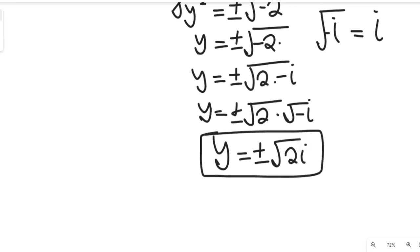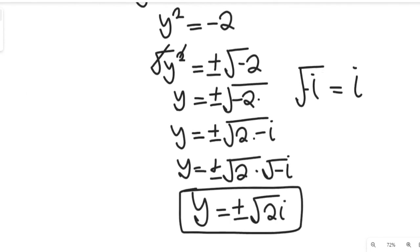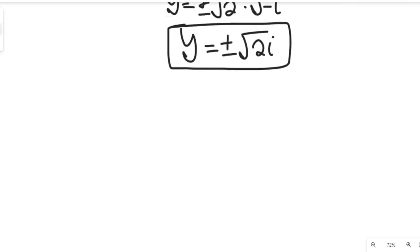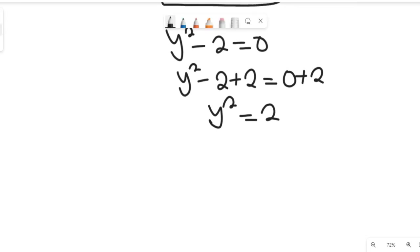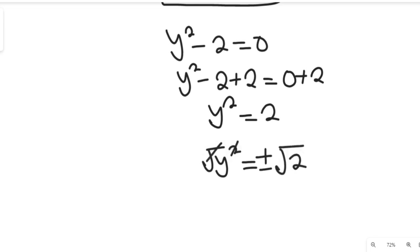That's one of the solutions. Now for the second equation: y squared minus 2 equal to 0. We add 2 to both sides — y squared minus 2 plus 2 equals 0 plus 2 — to remove 2 from the left hand side. So minus 2 plus 2 gives us 0, leaving y squared equal to 2. Taking the square root of both sides, we get y equal to plus or minus the square root of 2.